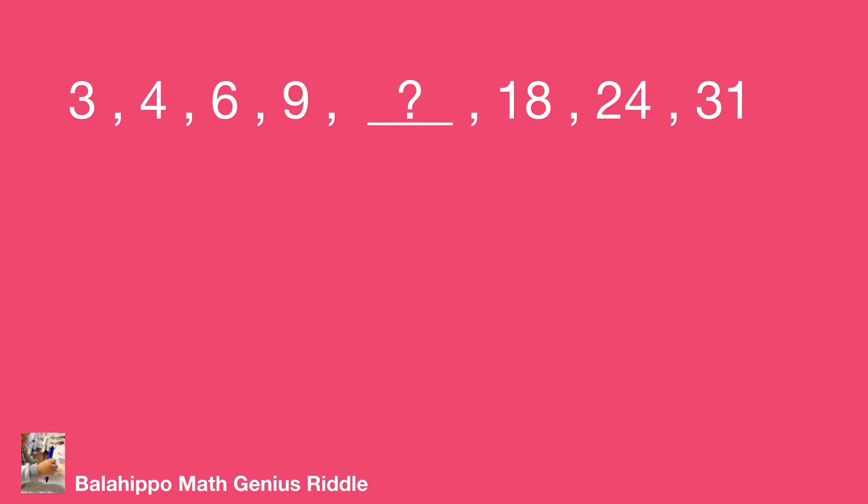Within these numbers, we find 3 plus 1 is 4, 4 plus 2 is 6, 6 plus 3 is 9. Then check 18, 24 and 31.